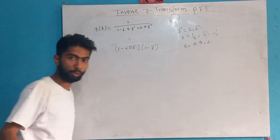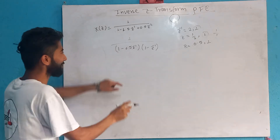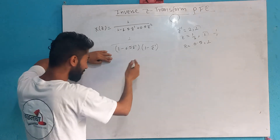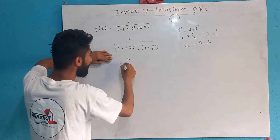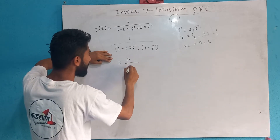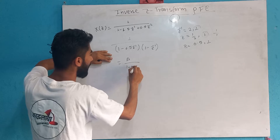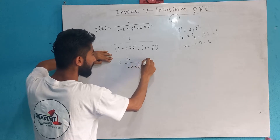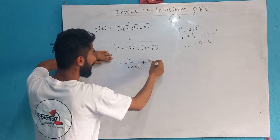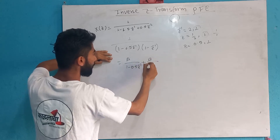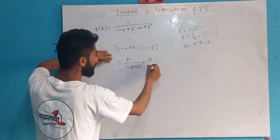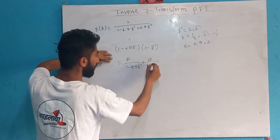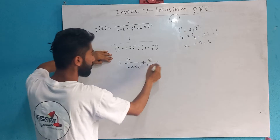This one is the normal form. This is A by (1 minus 0.5 z-inverse) plus B by (1 minus z-inverse). This is the standard partial fraction form.